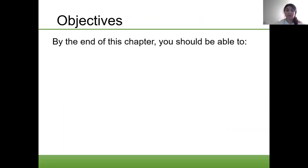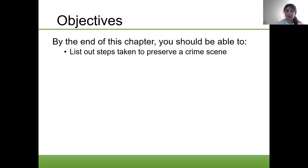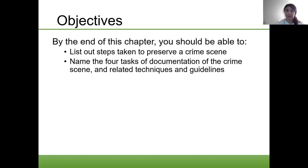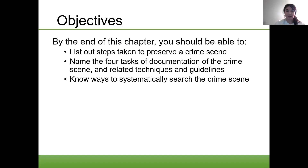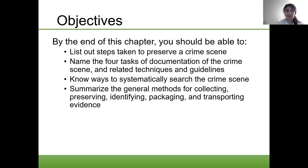The objectives: by the end of this chapter — Investigating the Crime Scene, Chapter 1 — you should be able to list out the steps taken to preserve a crime scene, name the four tasks of documentation of the crime scene, and related techniques and guidelines. Know ways to systematically search the crime scene.